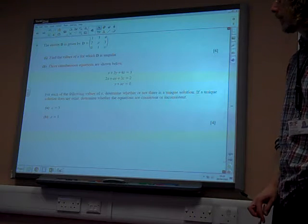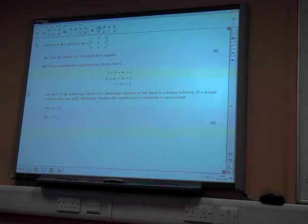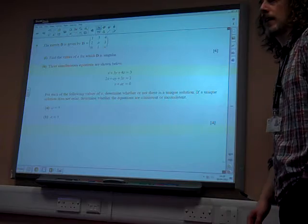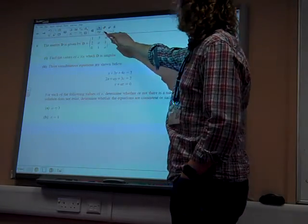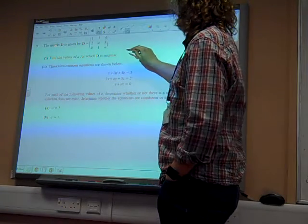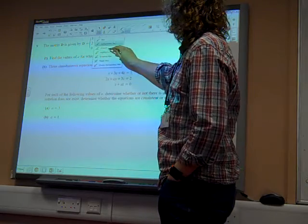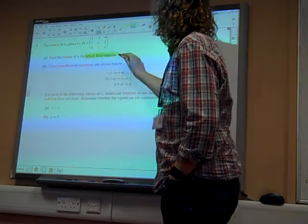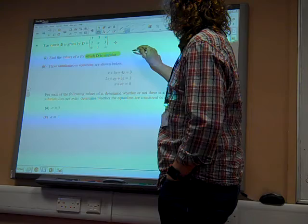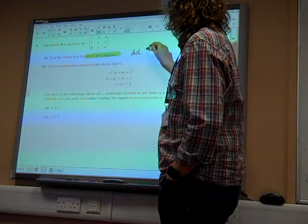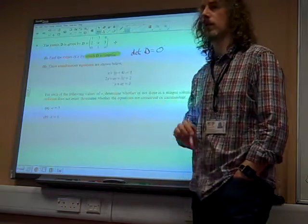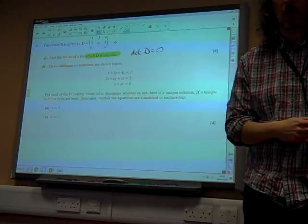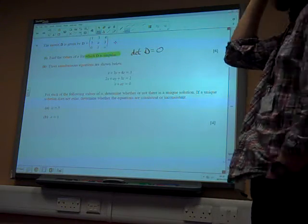Here we go. So question 9. The matrix D is given by that matrix there. Find the values of A for which D is singular. This is just a little bit of knowledge. We know, don't we, that when it says for which D is singular, that's just saying to us, find when the determinant of D equals 0. That's what that means. That's what we're looking for when it says values for which it's singular.